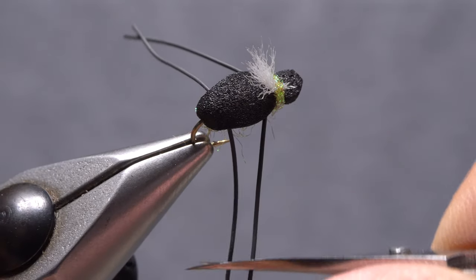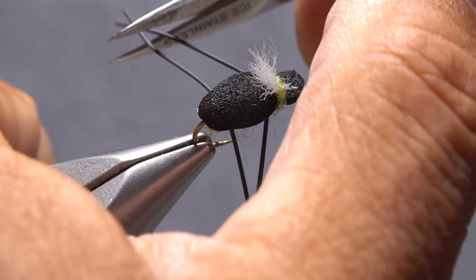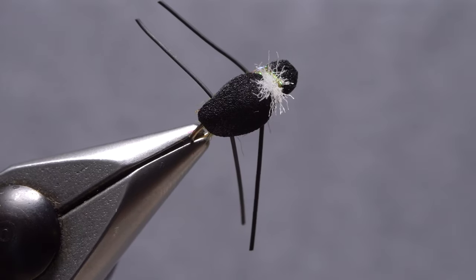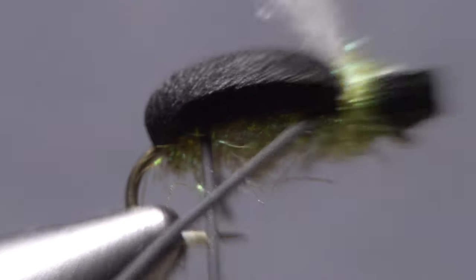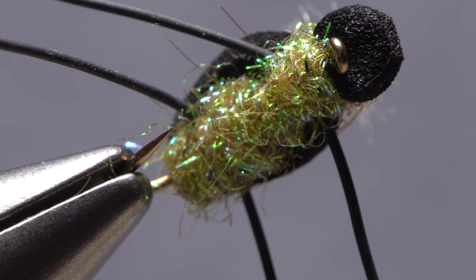Place the fly back in its normal orientation in your tying vise then trim the legs to about a hook or slightly more in length. The underside of the fly should be fairly full yet still not block the hook gap too much.